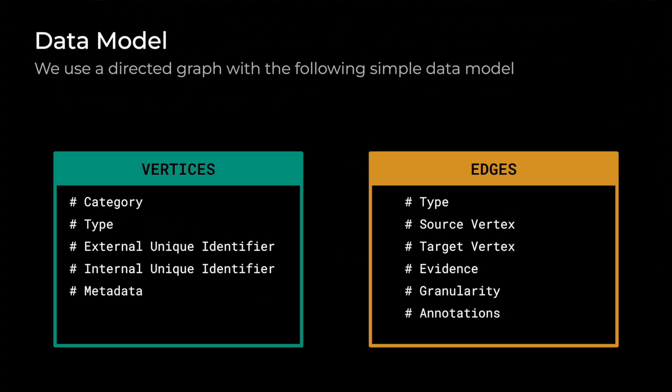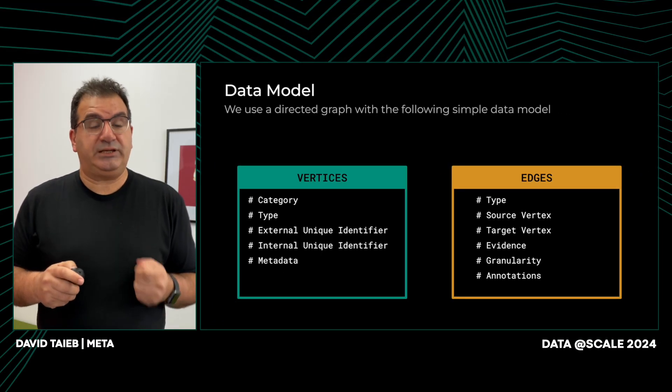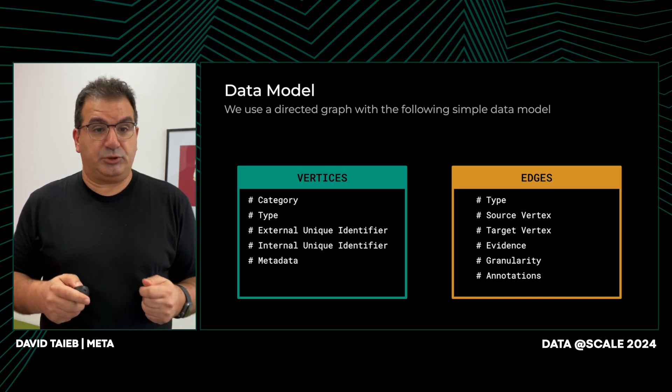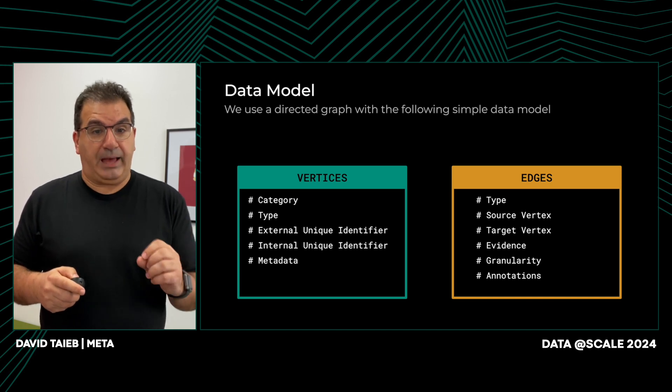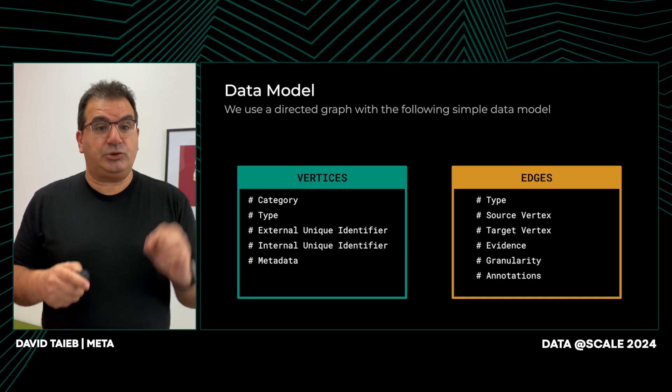Looking at the data model, we want to retain as much important information as possible about each asset and each flow. We use a simple yet very flexible data model. For the vertices, we store the category of the vertex — either an asset or an evidence, where evidence is a process that generated that asset. For the type, we have the class of assets; there are hundreds of classes in the warehouse, for example a Hive table or Spark query for an evidence. We store an external unique identifier, which uniquely identifies assets in human-readable form using a Meta-wide convention consistent across all internal storage. We also store an internal unique identifier, which is a big integer for efficient computation. Finally, we store metadata as free-form key-value pairs of attributes that provide contextual information about the vertex.